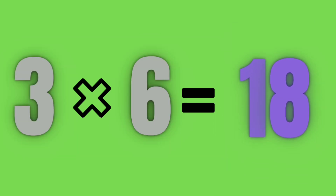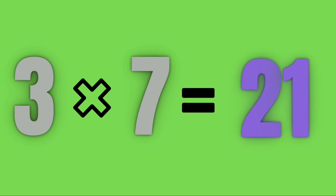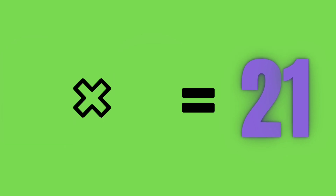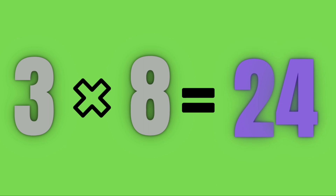Three sixes are eighteen. Three sevens are twenty-one.